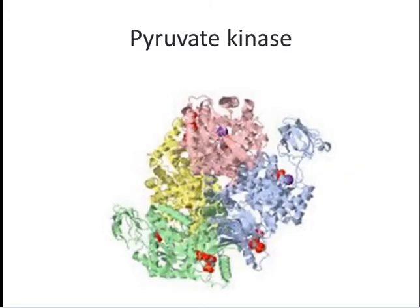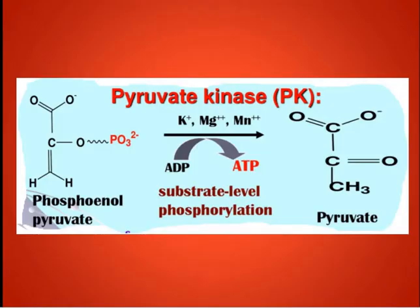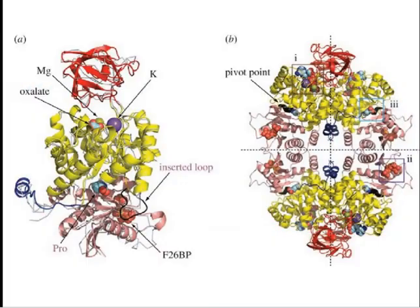For example, muscle pyruvate kinase is a tetrameric enzyme that catalyzes the conversion of phosphoenolpyruvate (PEP) in the presence of ADP and K⁺ or Mg²⁺/Mn²⁺ into pyruvate plus ATP. This reaction requires both alkali metal cations and Mn²⁺ or Mg²⁺, all of which bind in the region of the active site. Studies indicate that the carboxyl group of PEP binds to the enzyme-bound K⁺, whereupon a conformational change facilitates the reaction via the enzyme–Mn²⁺–PEP complex.